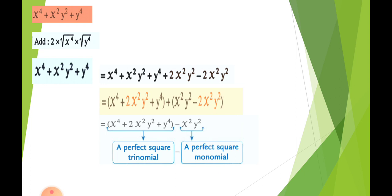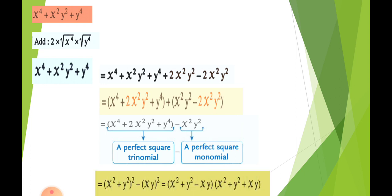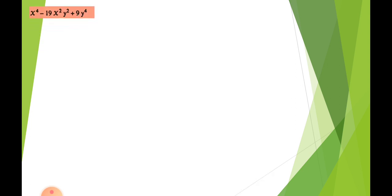We factorize the perfect square trinomial as (x² + y²)², and the second expression as (xy)². So we write (x² + y²)² − (xy)², and opening two brackets gives: (x² + y² − xy)(x² + y² + xy). Next, example three: x⁴ − 19x²y² + 9y⁴.